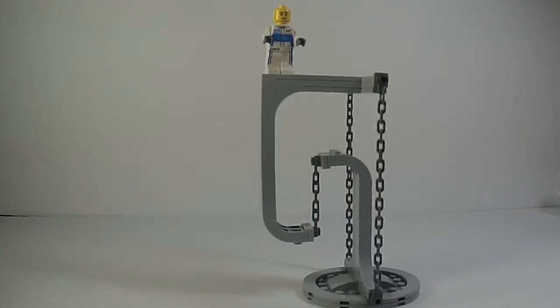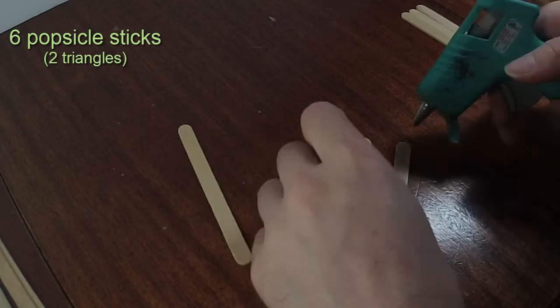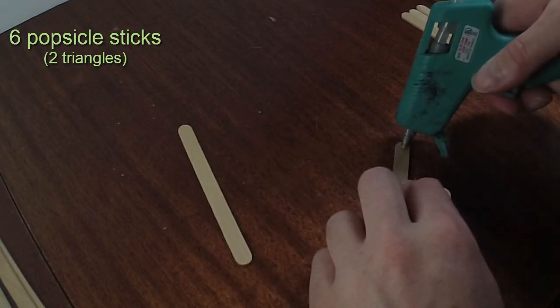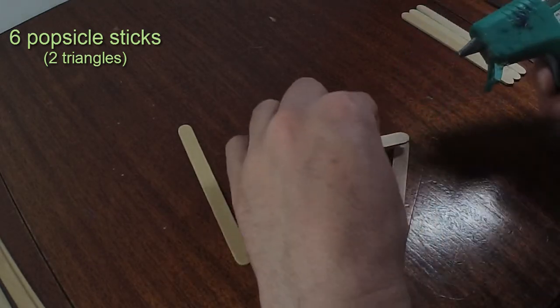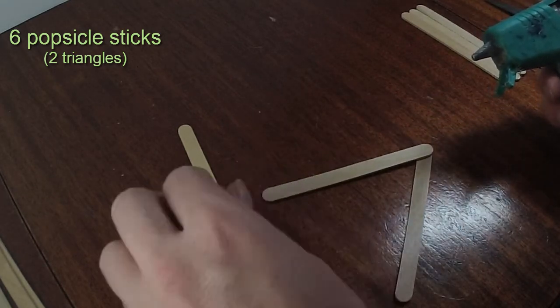So let's make our own. First, we're going to start off with six popsicle sticks. And what we're going to do with these six popsicle sticks is we are going to glue them with hot glue to make two triangles.